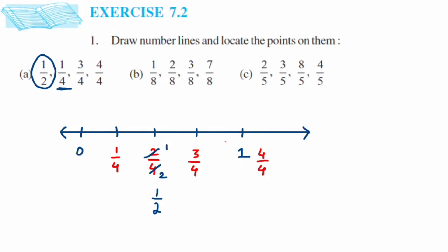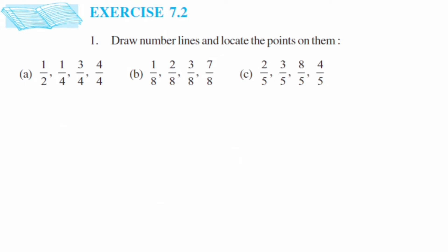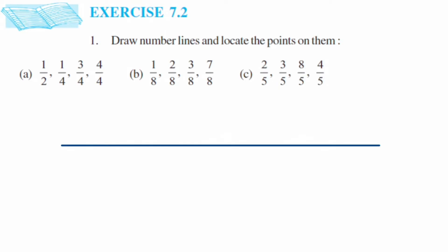Moving to the second question — the denominator is 8, so we have to divide between 0 and 1 into 8 equal parts. This is a proper fraction: the numerators are 1, 2, 3, and 7, which are all less than 8. Since the denominator is 8, I'm going to divide into 8 equal parts between 0 and 1.